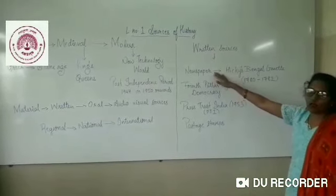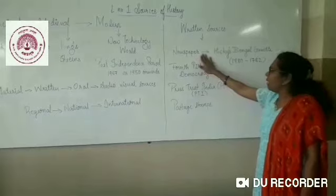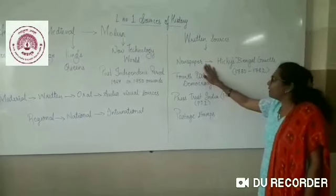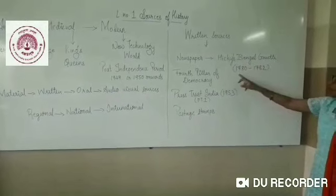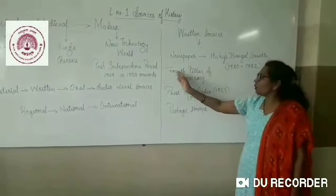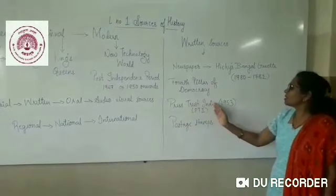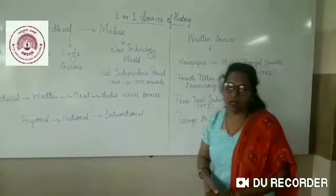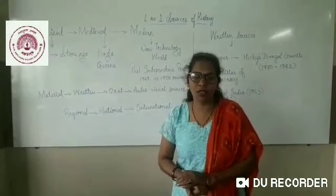In written sources, you have newspapers. A newspaper is an important document found in history as it talks about older periods when we were not present. The first newspaper was introduced by Hickey's Bengal Gazette from 1780 to 1782. Newspapers are considered the fourth pillar of democracy. Press Trust of India, PTI, was established in 1953. It is an organization that gathers all news together and is a non-profitable organization.